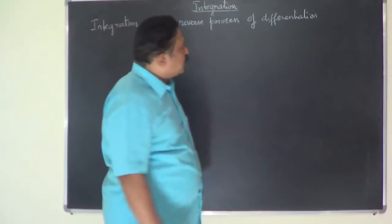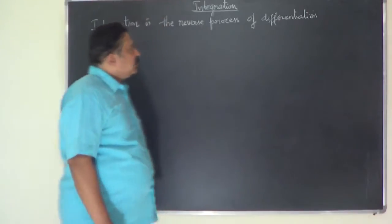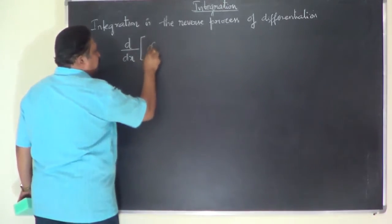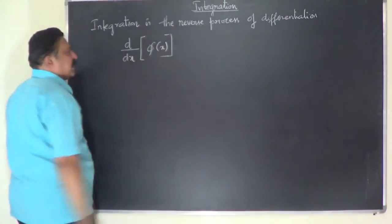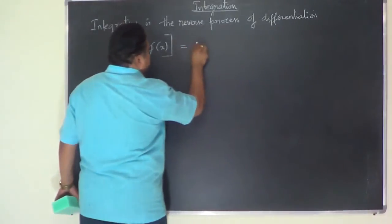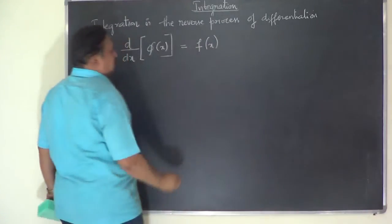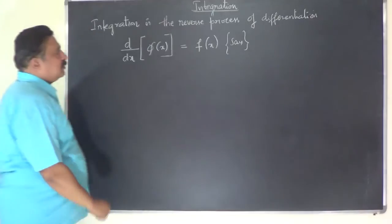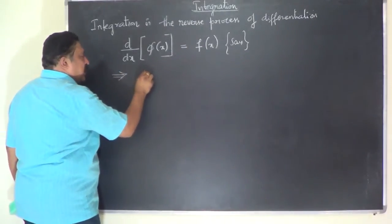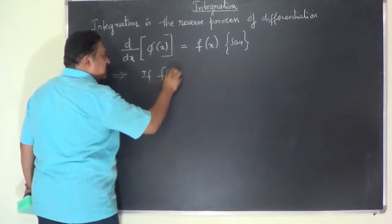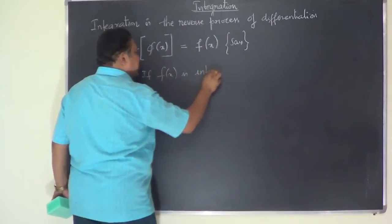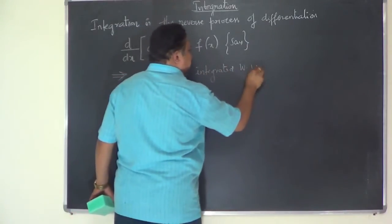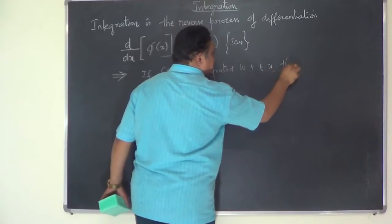Integration is the reverse process of differentiation. If phi of x is the function which is differentiated, then the differential coefficient we get is f of x. This means that if f of x is integrated with respect to x, then we get phi of x.